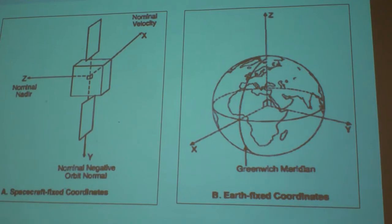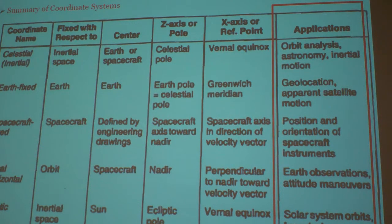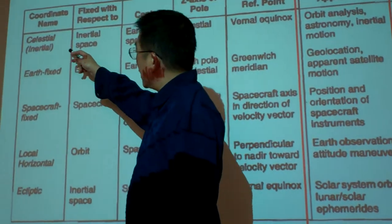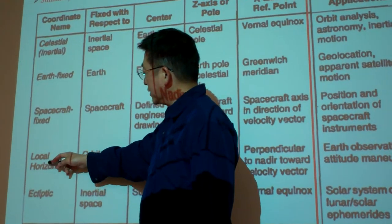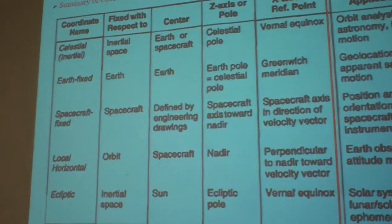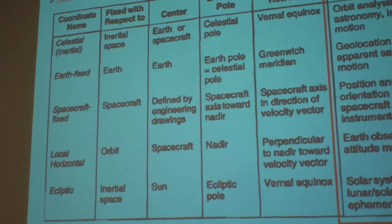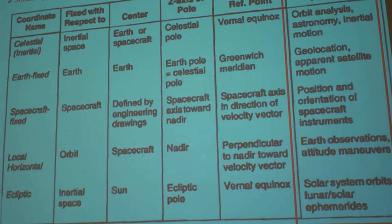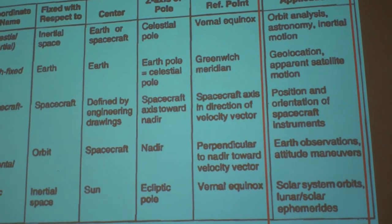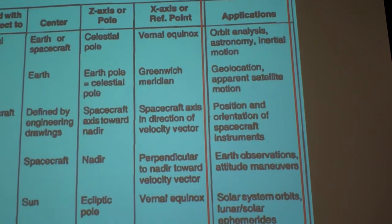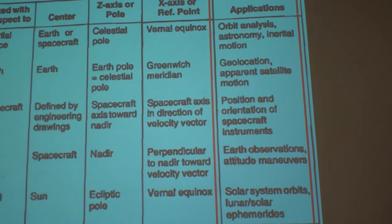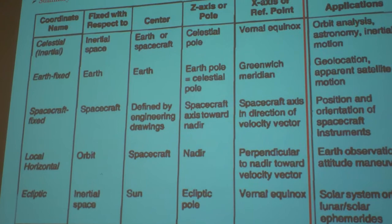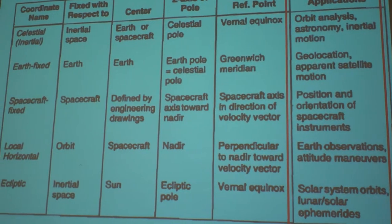This table summarizes the coordinate systems we have — one, two, three, four, five. The most important thing is the application: depending on the application, we pick whatever coordinate system is most convenient. These slides have been uploaded onto our Blackboard, so they are available.